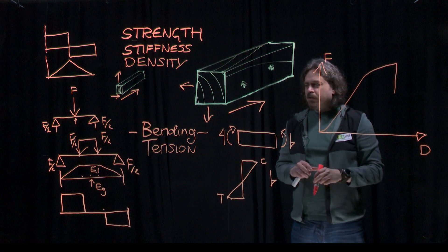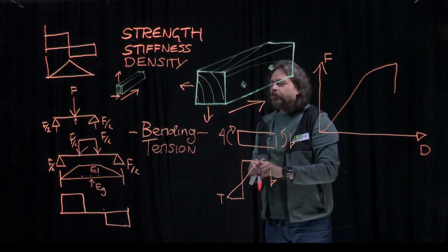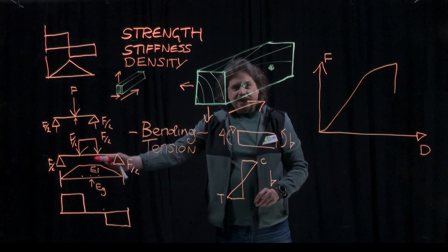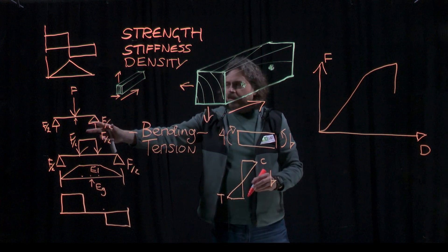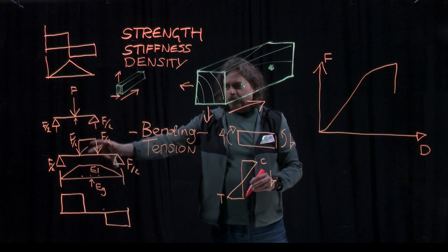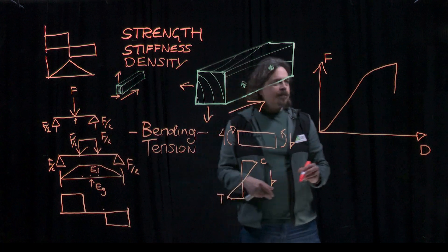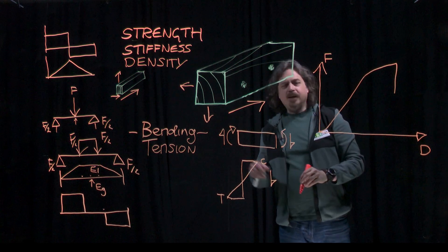We run these tests in what's called position control. We're moving the crosshead, applying the force by actually moving the actuator downwards. We're not actually increasing the force. We're pushing the specimen downwards at a fixed rate. And that allows us to have actually decreasing force. It's a safer way of doing the testing.